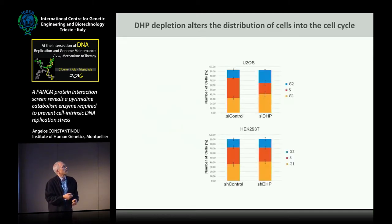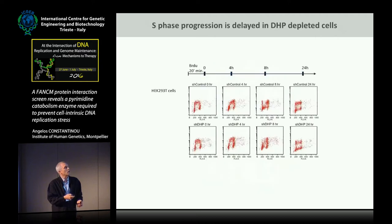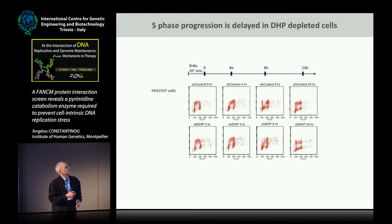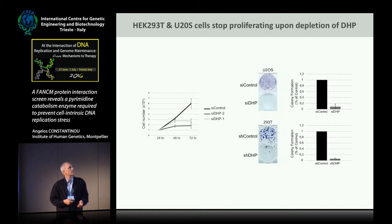We used siRNA to knock down DHP in U2OS cells, or a plasmid encoding shRNA with a different target sequence in DHP in 293T cells. In both situations, suppression of DHP severely alters the distribution of cells in the cell cycle—the proportion of cells in S phase is diminished. We then pulse-labeled with BrdU to follow cell cycle progression by two-dimensional flow cytometry. Normal cells progress towards G2 and back to G1 and S phase, but this progression is delayed in cells lacking DHP, with accumulation in G2 and then G1. After several days, absence of DHP in U2OS and 293T cells severely compromised their growth, as revealed by colony formation assay and crystal violet staining.